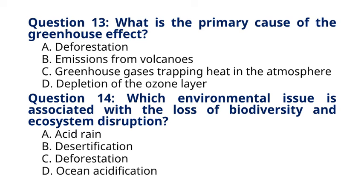Question 14. Which environmental issue is associated with the loss of biodiversity and ecosystem disruption? A. Acid rain. B. Desertification. C. Deforestation. D. Ocean acidification. The correct answer to question 14 is option C. Deforestation. Explanation: deforestation leads to the loss of biodiversity and disruption of ecosystems, affecting habitats, species populations, and ecological processes.